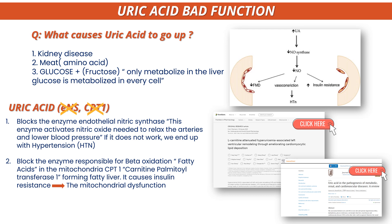CPT1 — carnitine palmitoyltransferase 1 — is another enzyme that blocks what is called beta-oxidation, where we break down fatty acids at the mitochondria. CPT1 acts like a carrier, bringing carnitine and fatty acids inside the mitochondria so the body can break them apart. If the body cannot break apart fatty acids, we get an increase in fatty acids, which contributes to fatty liver.